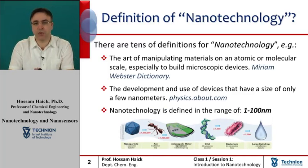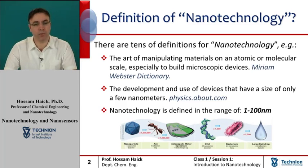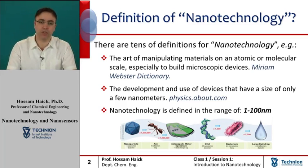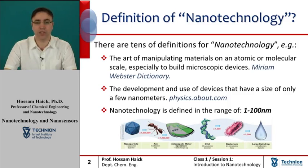The prefix nano is derived from the ancient Greek 'nanos,' which means dwarf. Today, nano is used as a prefix that means billionth, or a factor of 10 to the minus 9. Coupling the word nano with the unit meter brings the term nanometer, which indicates a unit of spatial measurement that is one billionth of a meter. With this in mind, we shall define nanotechnology as the science, engineering, and technology conducted at the scale that ranges between 1 to 100 nanometers.